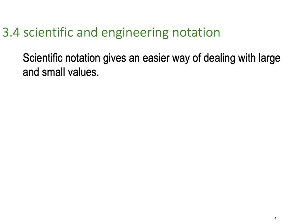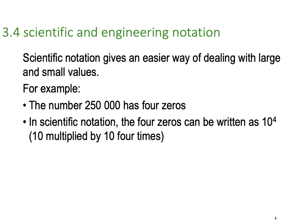Scientific notation gives an easier way of dealing with these large and small values, which we kind of said in the previous lesson. For example, if you had a number of 250,000, it has four zeros. In scientific notation, the four zeros can be written as 10 to the fourth, so 10 multiplied by 10 four times.